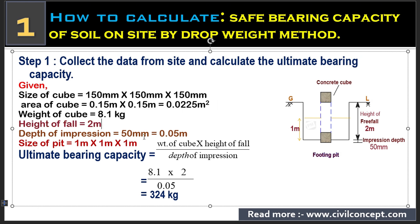The weight of the cube is 8.1 kg and the height of fall is 2 meters. When we drop the cube from that height, it settles into the soil — this settlement is known as the depth of impression, which is 50 mm, or 0.05 m. The size of the footing is 1 m × 1 m × 1 m.